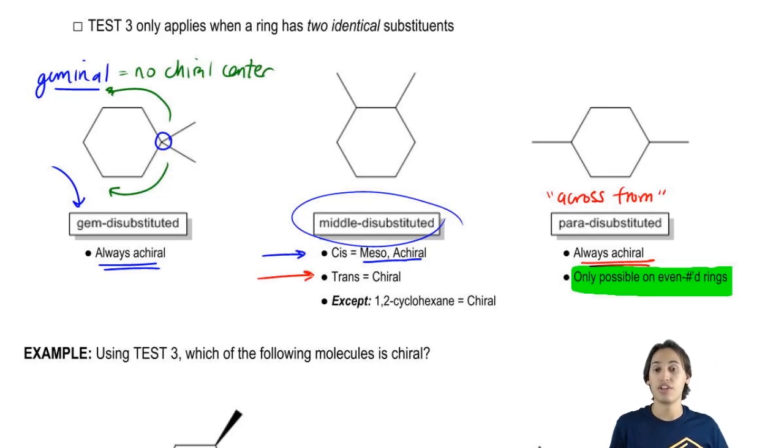If they are trans, then it's always going to be chiral. You don't have to test it, you don't have to do R or S, anything like that. Just say it's going to be chiral for sure.